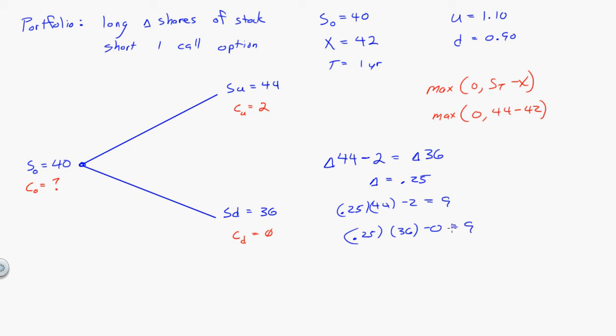And 0.25 times 36 minus zero is equal to nine dollars. So who cares if it goes up or down, it's going to be worth nine dollars. Using that insight, I can find the value of the call because I know today I bought 0.25 shares that cost $40, I sold a call, I don't know what it's worth, but I know that the payoff of this portfolio next year will be exactly nine dollars regardless of what happens.